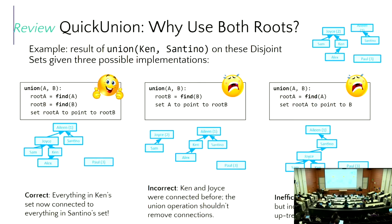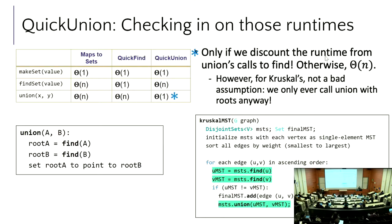Why do we use roots instead of individual items in quick union? By using the roots, that helps us keep the tree nice and short, instead of destroying the trees. Using roots prevents growing the tree unnecessarily on each union.